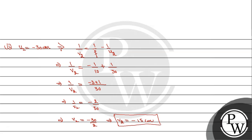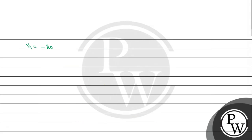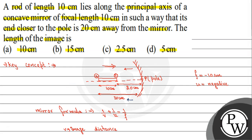So, the image of the first end is 20 cm from the mirror and the image of the second end is 15 cm from the mirror. The length of the image is the distance between these two image positions: L = 20 cm − 15 cm = 5 cm. Therefore, the length of the image is 5 cm, which corresponds to the correct option in the given choices. I hope you understood it well. Thanks.